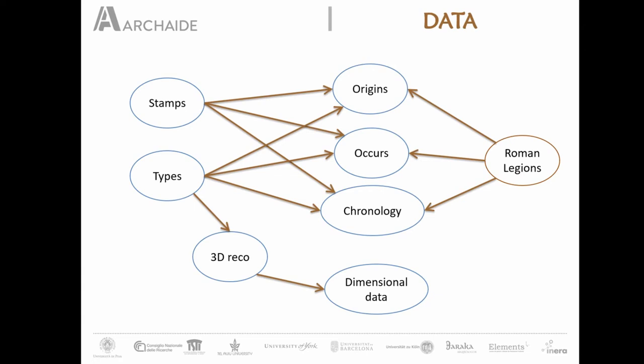The data we have includes the stems — that is, the workshops that produced Terra Sigillata — which types were produced, where they were produced, where they were found, the chronology of both the types and the stems, 3D reconstruction models providing dimensional data about the pottery itself, and also other kinds of data.